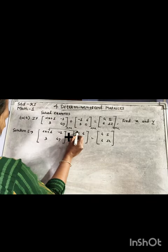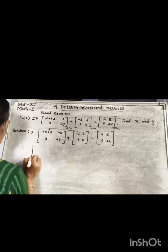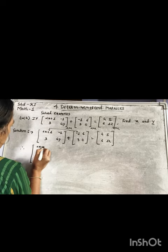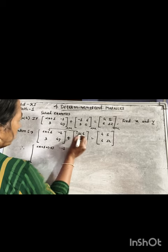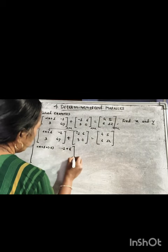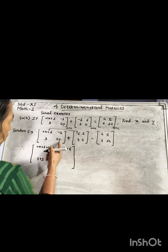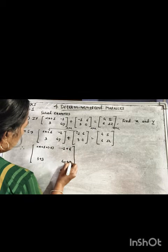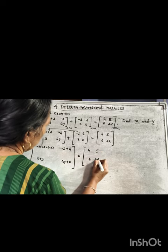We add the corresponding elements: 2x+1 plus (-1), then -1 plus 6, then 3 plus 3, and 4y plus 0, which equals [4, 5; 6, 12].